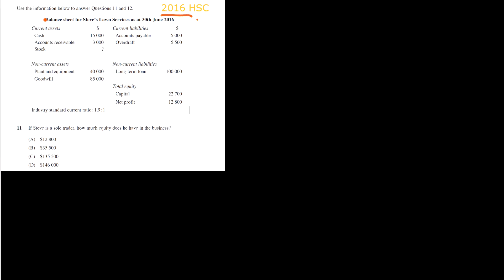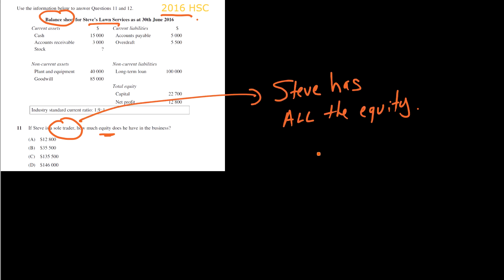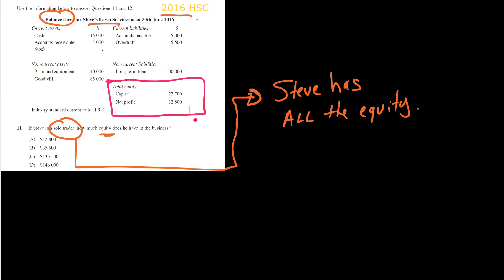Let's start with our first one. We are looking at the 2016 HSC — we've got a balance sheet here for Steve's Lawn Services. The question asks: if Steve is a sole trader, how much equity does he have in the business? Since Steve is the sole trader, he doesn't have to share that with anyone. So if we look at the total equity section, that is the size of equity in the business — Steve gets all of it. The figure is $35,500.